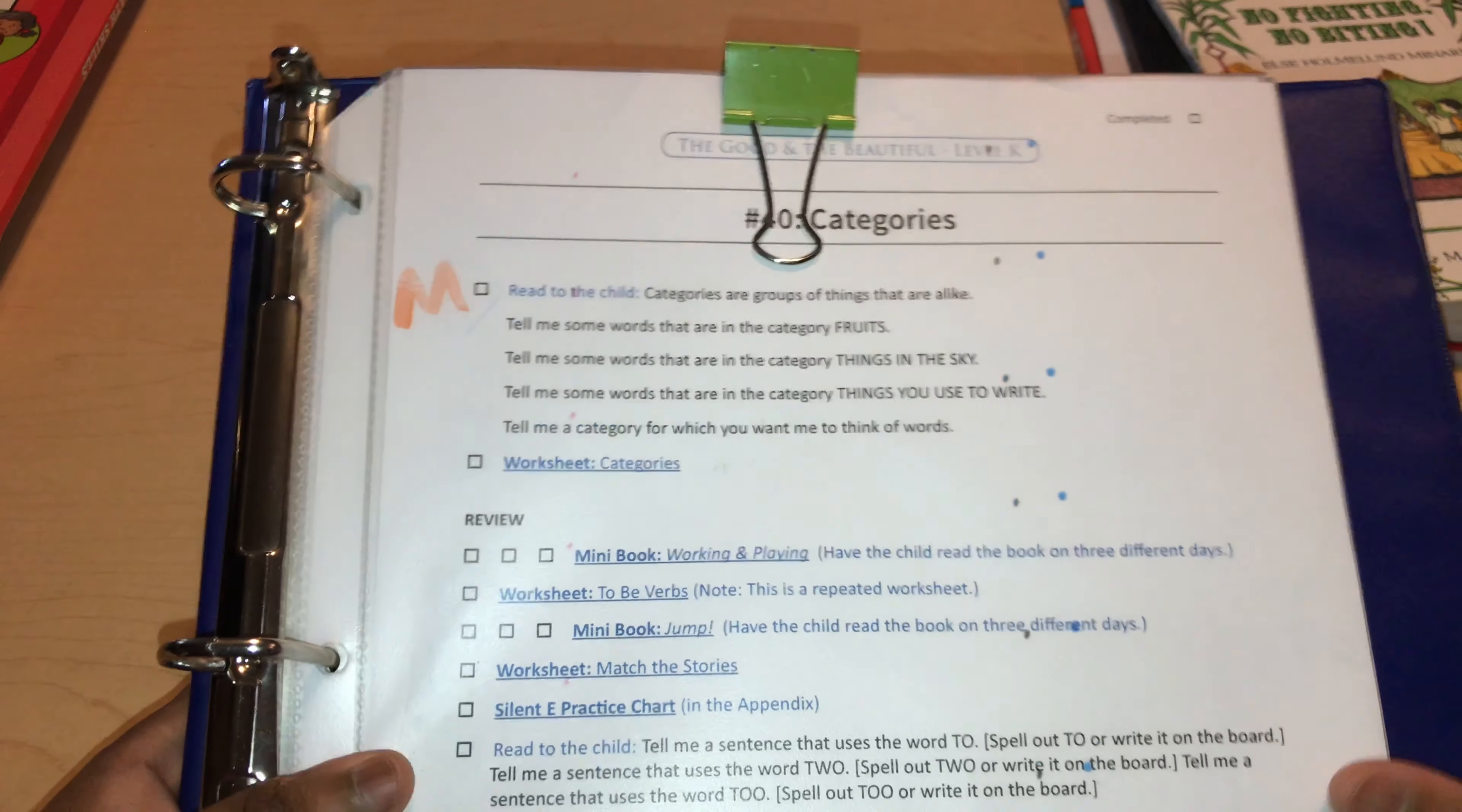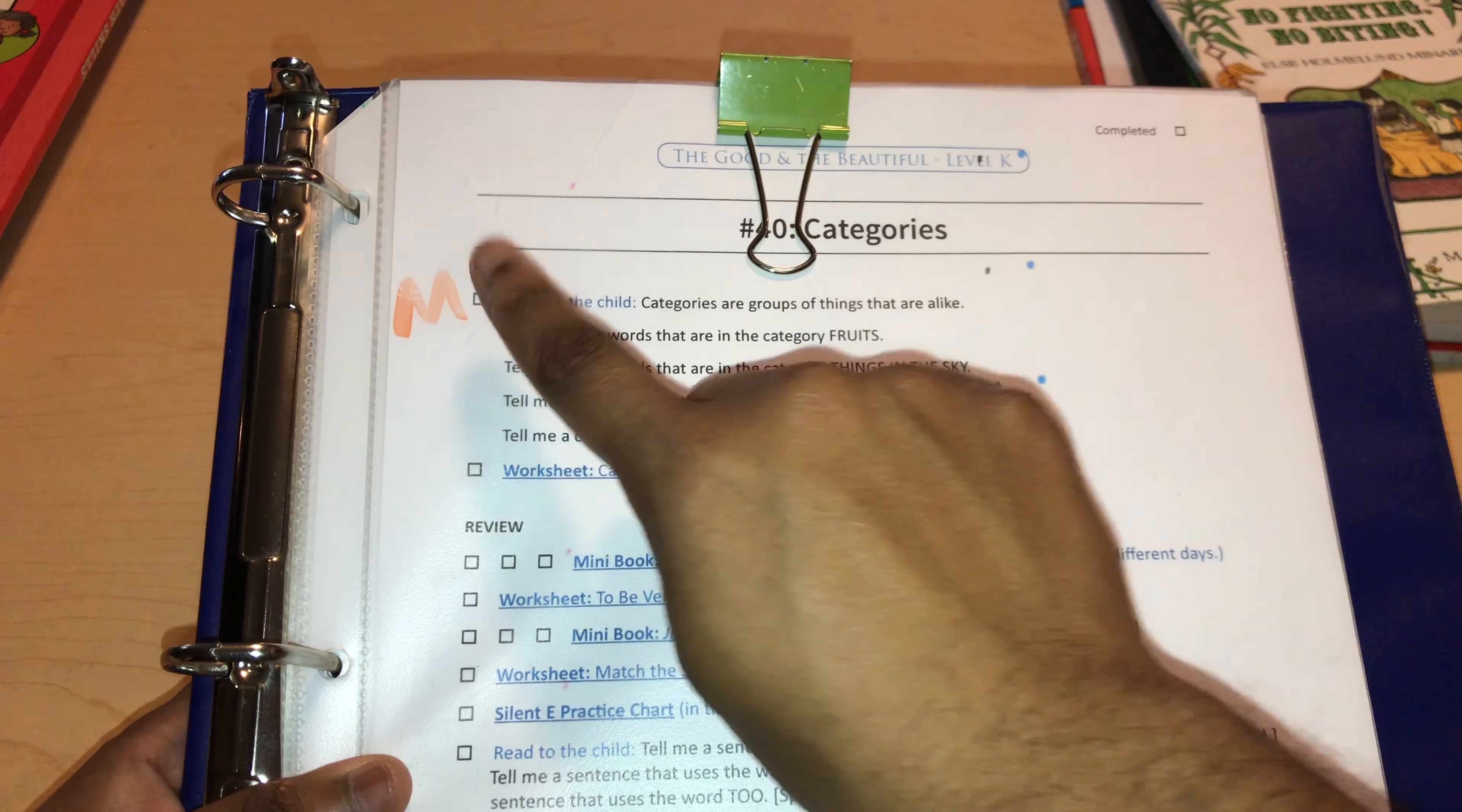For language arts, in The Good and the Beautiful, she's in lesson 40, and she'll be working on these two little boxes here.